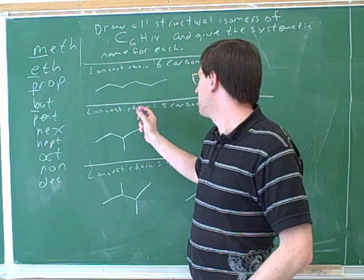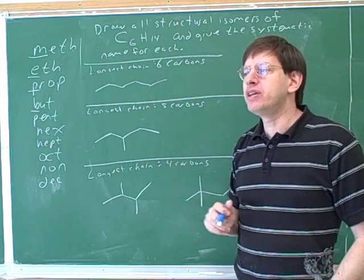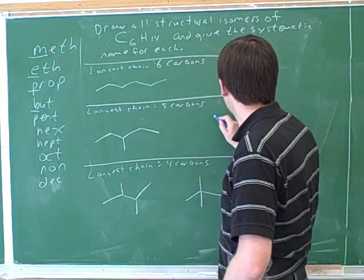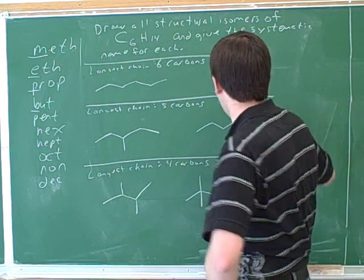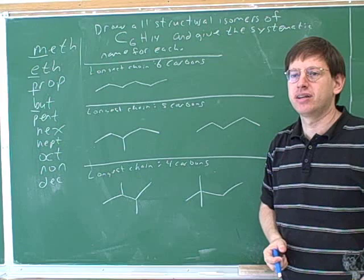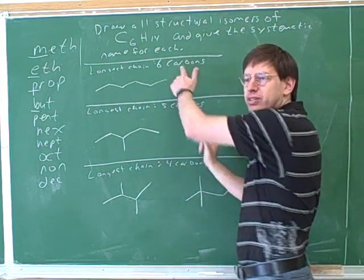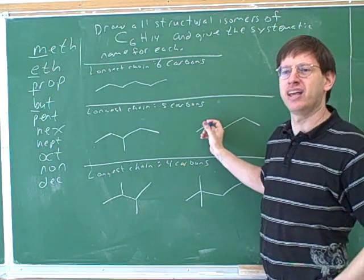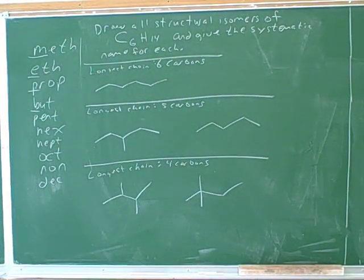The next thing is to say we're going to do a longest chain with five carbons. I think you guys might have missed one or two, and the reason is that we're not being systematic enough. So let's write the five carbons: one, two, three, four, five. Now, how many extra carbons do I still have to put in? One. Should I put it here? No, because that will take me back to six carbons. Can I put it here? Yes — I think you guys both missed that one.